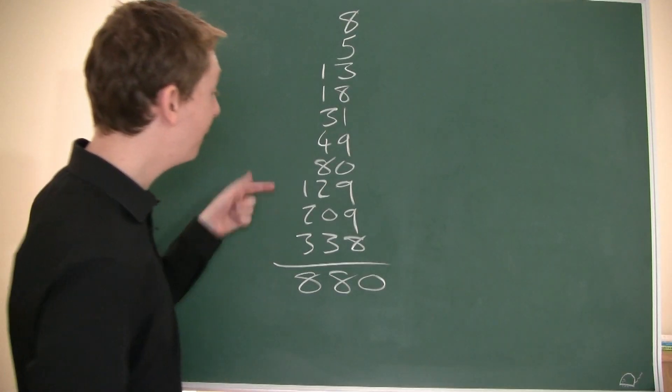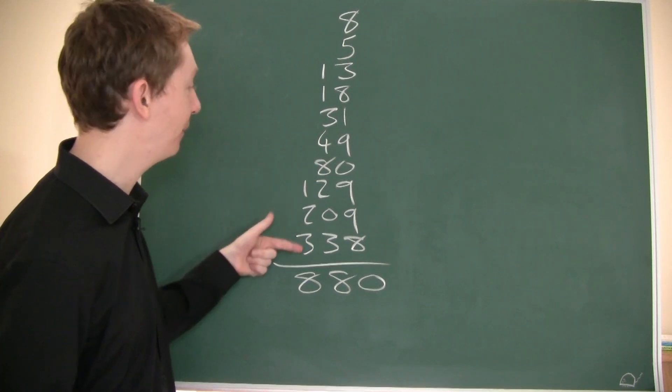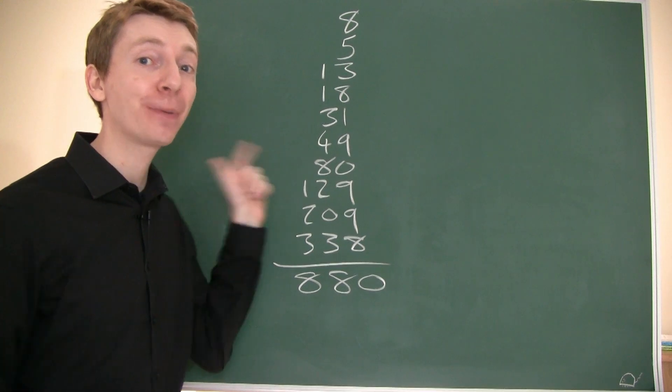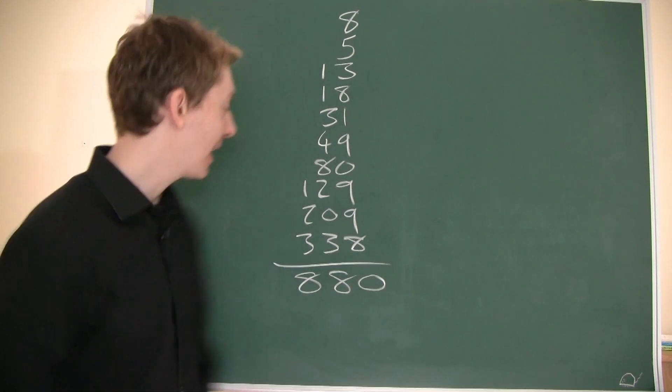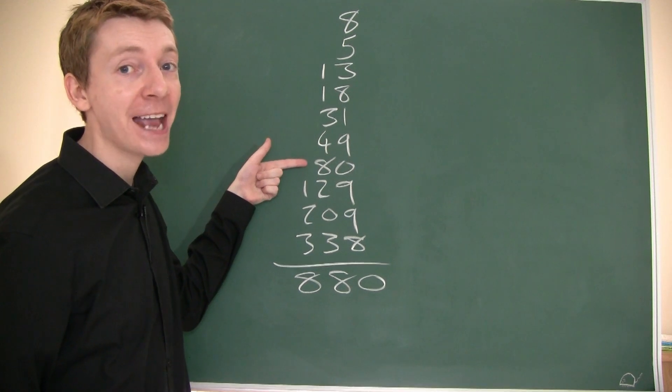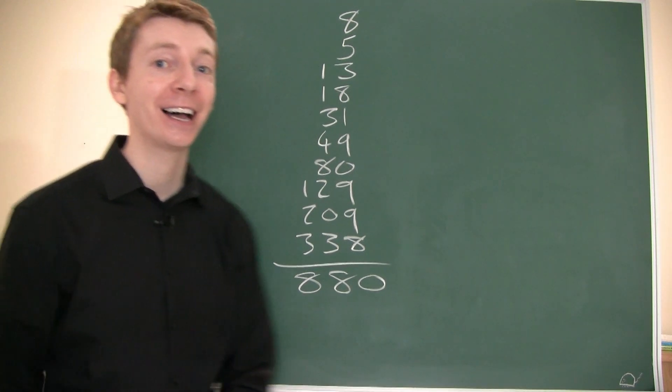So the trick here is to look at the fourth number from the bottom. The fourth number from the bottom in this case was 80. And you take that number and you multiply by 11. And that's your final answer. So it's the fourth number from the bottom, 80 in this case, and multiplied by 11.